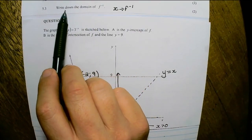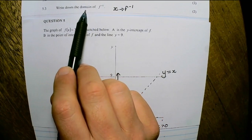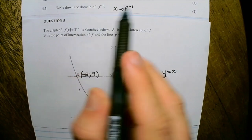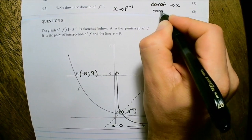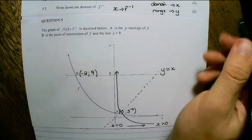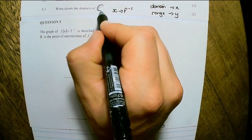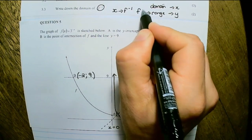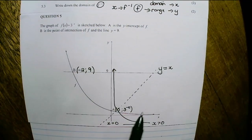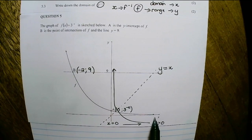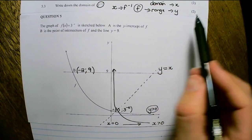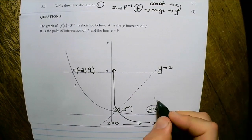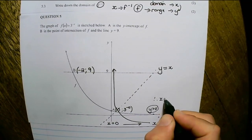Another way to find the domain of the inverse function is to consider the range of the original function. Domain discusses x values and range discusses y values. Looking at the graph, the range is y greater than 0 because the graph is always above the x-axis. To convert that to the inverse function, simply swap x and y's positions. Therefore, the domain of the inverse function is x greater than 0.